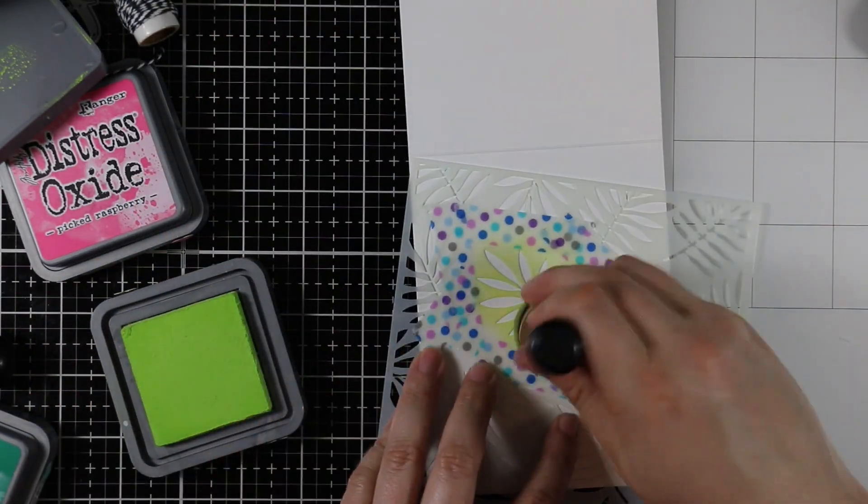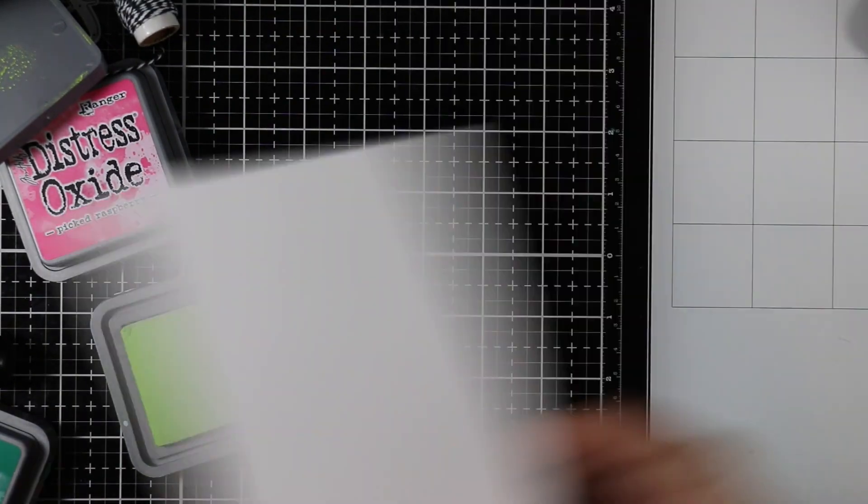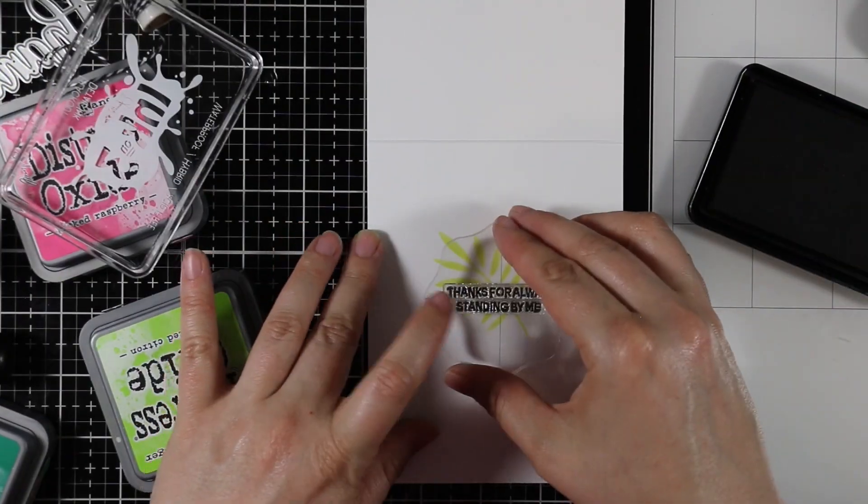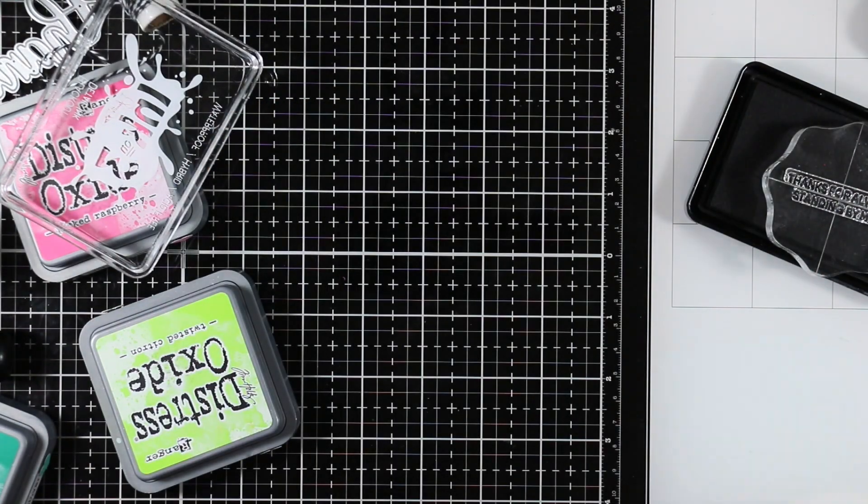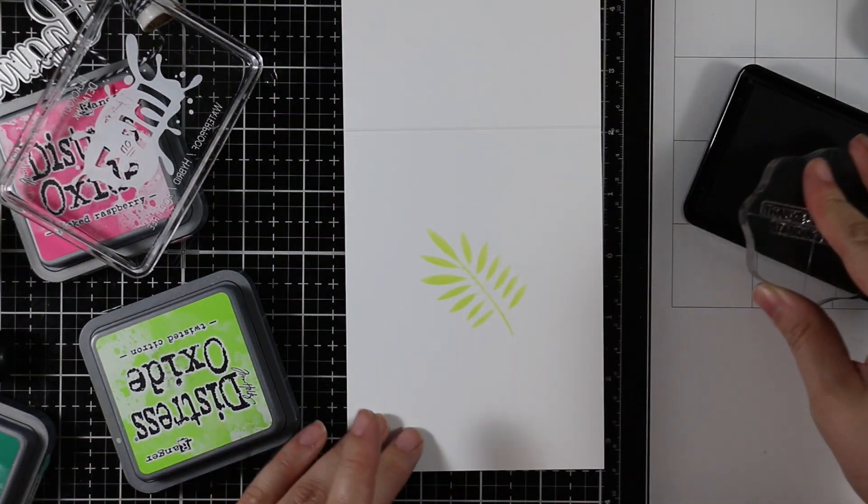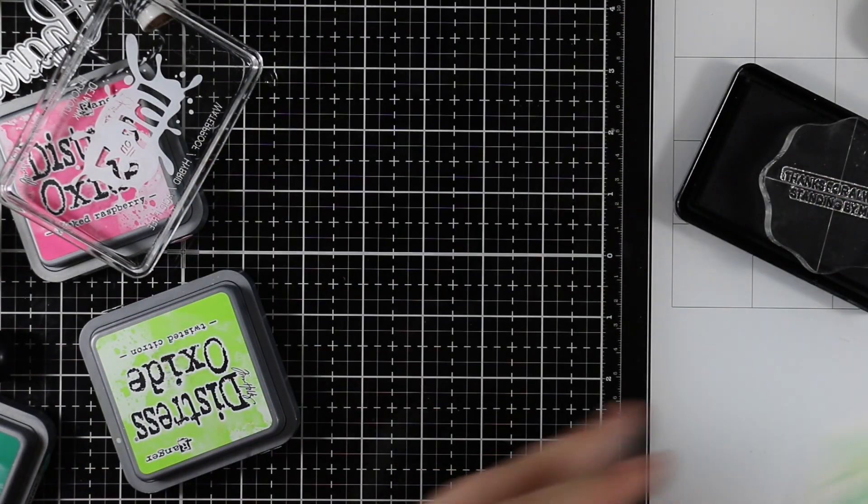I took a sentiment from the Wingman stamp set and butted both of them together and then I'm inking them up with that same Blackout ink and I'm going to stamp that on top of all of those sponged leaves on the insides of the cards and that's going to finish off all my cards.